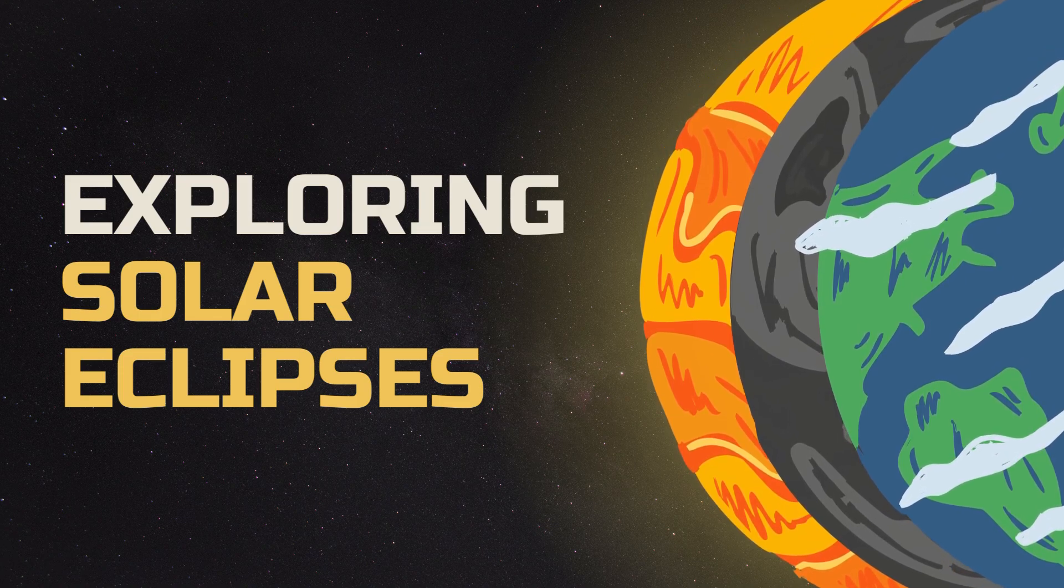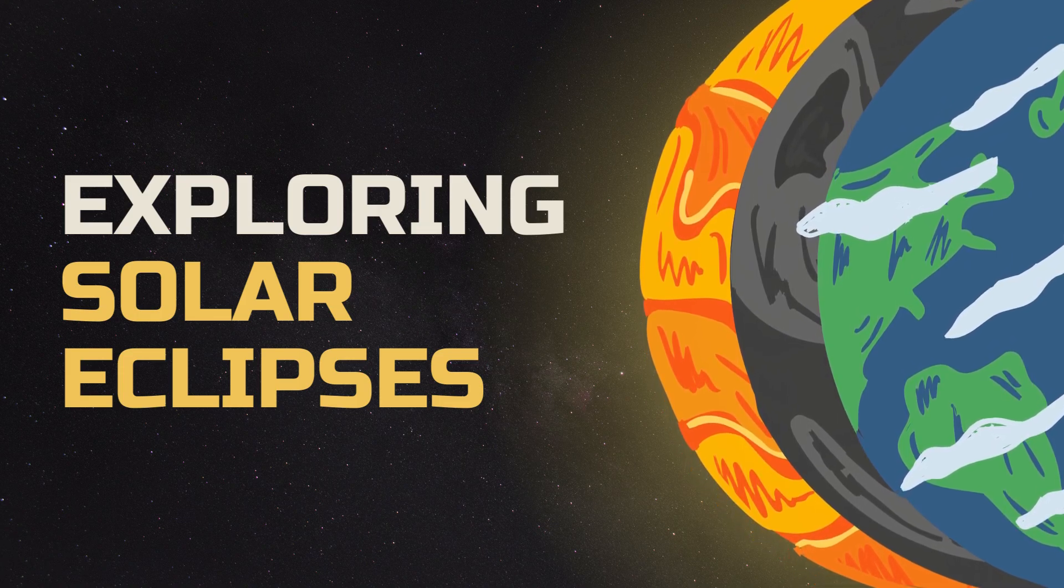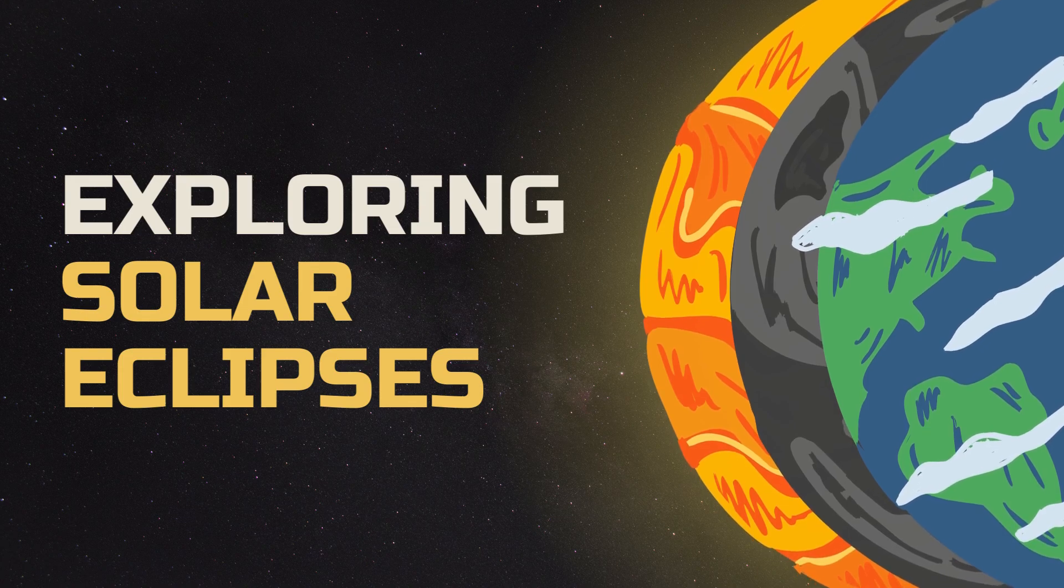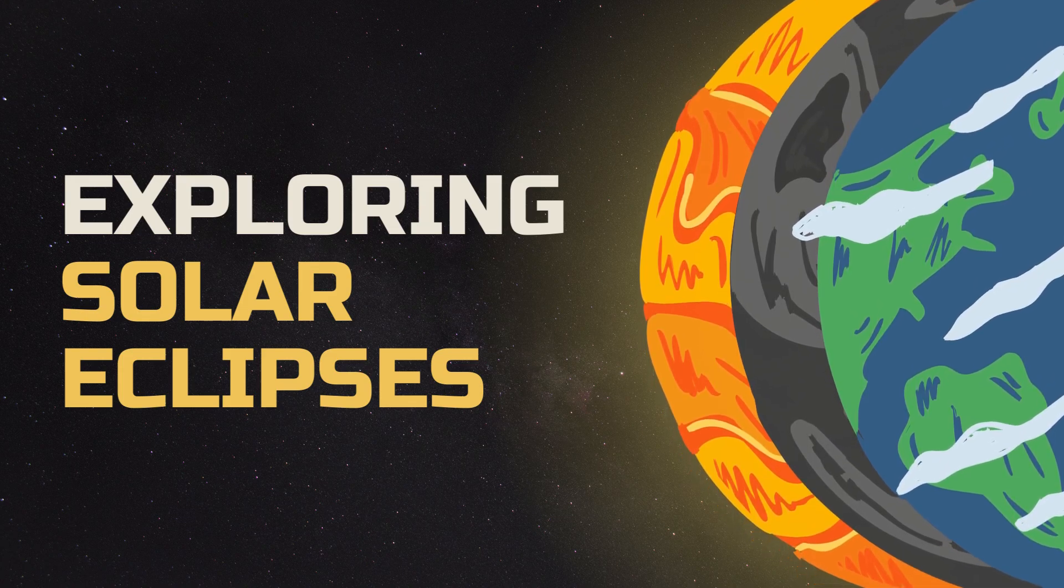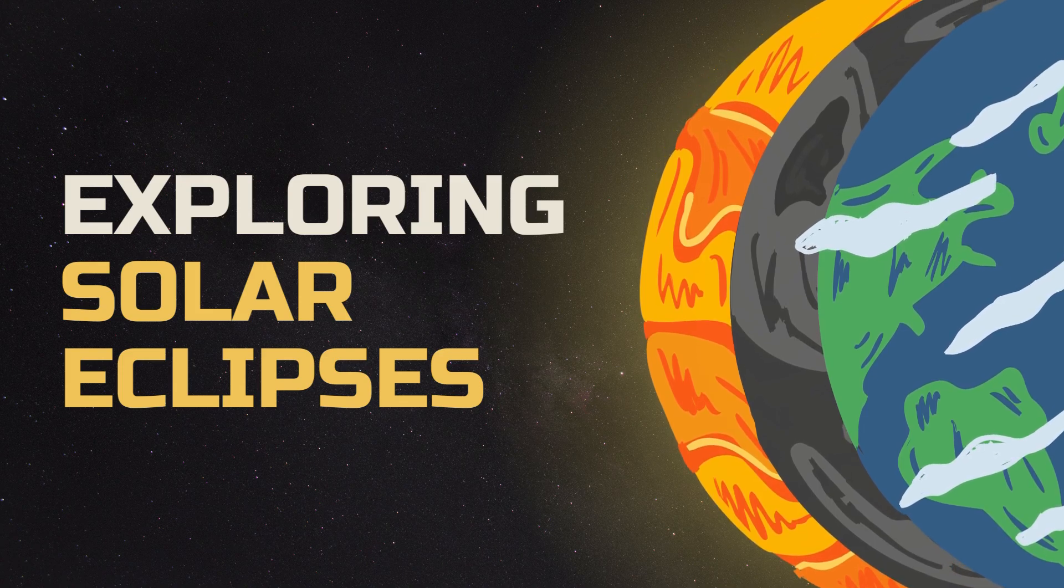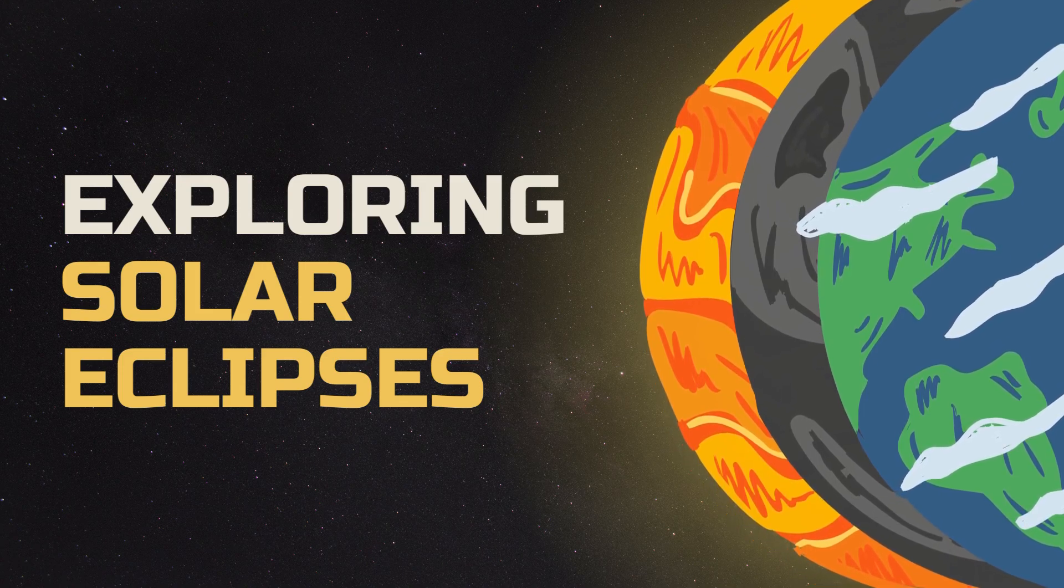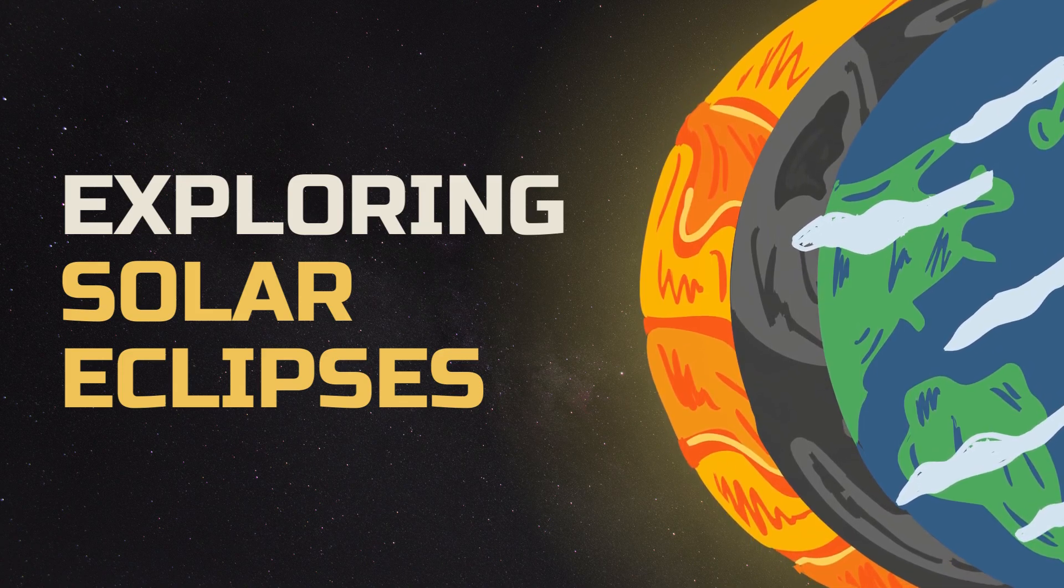Today we are going to talk about the April 8 solar eclipse that is going to happen in the United States. For most parts, it is going to be a partial solar eclipse, but in certain parts of the United States, it is going to be a total solar eclipse.